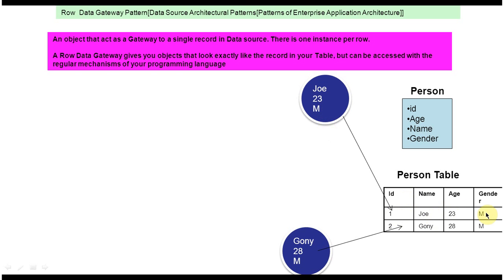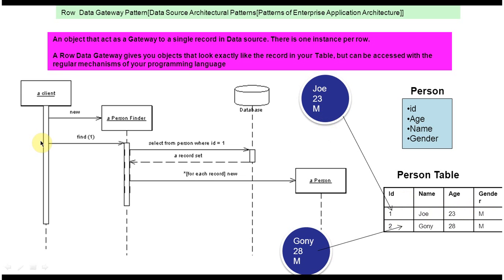Now let's see how it works. We have four components: Client, Person Finder, Database, and the Person class. Suppose we want to get the first row from the person table and create a person object from it. The client will call the Person Finder, and then it calls the find method in the Person Finder. The Person Finder will execute 'SELECT FROM person WHERE id = 1', which gives the first record — the Joe record. Using this record set, we can create the person object.